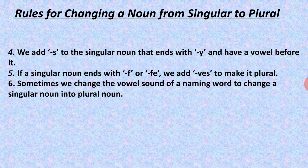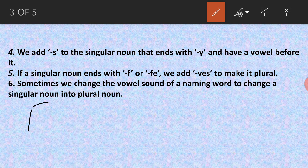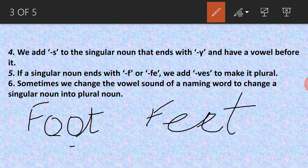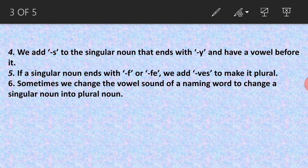The next rule: sometimes we change the vowel sound of a naming word to change a singular noun into a plural noun. We do not add 's' or 'es'; rather, we just change the vowel sound only. For example, 'foot' — f-double-o-t. The vowel sound here is the 'oo' sound. How does it change in plural? It becomes 'feet' — the double-o changes to double-e. This is how we change vowel sounds to make singular into plural.